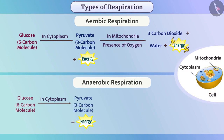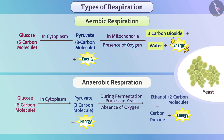Energy can be produced from the pyruvate molecules but the method may vary. In the cell organelle called mitochondria, in the presence of oxygen, a molecule of pyruvate is broken down into carbon dioxide and water, producing energy — this is aerobic respiration. Organisms such as yeast use fermentation, in which pyruvate is broken down into ethanol and carbon dioxide, producing energy in the absence of oxygen — this is anaerobic respiration.